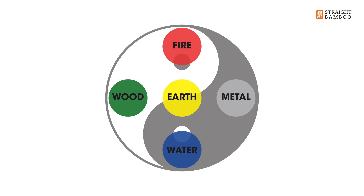The extension of that — the second symbol of Taoism — is the five elements, or what we should call the five phases: the Wu Xing, the five transformations. If you look at the diagram, you'll see an ancient diagram of the five phases with earth in the center.